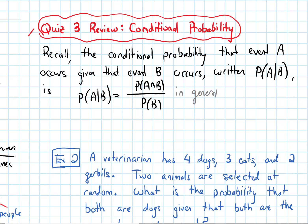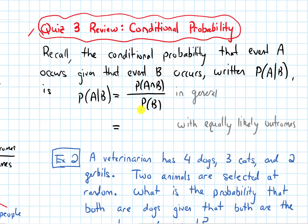But in the special case where we have equally likely outcomes, then on the top and on the bottom of our fraction, we can instead just write the number of elements in each set — the number of elements in the intersection of A and B on the top, and the number of elements in the set B on the bottom. So let's look at an example next.